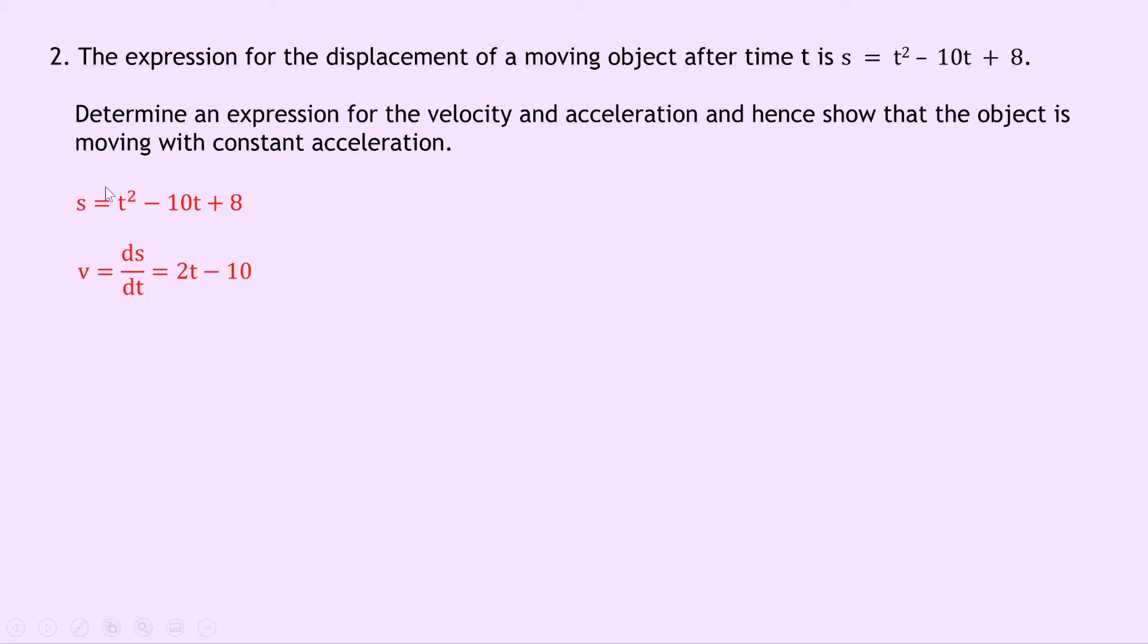Now the way we got this is firstly by taking the power down and multiplying it by the t so we get 2t and that power drops to 1 so that just becomes 2t and minus 10 because we've just got minus 10t there. So there's our expression for velocity and then to get the acceleration we need to differentiate that expression for velocity that we've just worked out with respect to time t. So we get a equals dv by dt which equals 2 because the 2t in the velocity expression is the only thing related to t. So we've got a equals 2 and this means that the acceleration is a constant value of 2 meters per second squared.